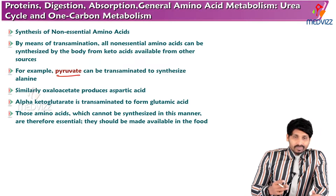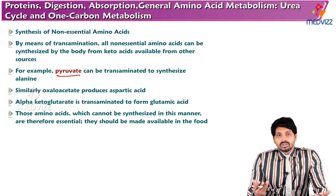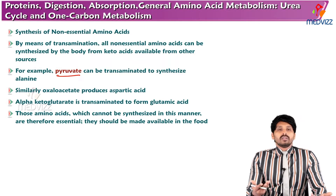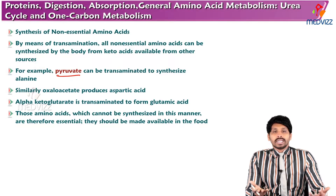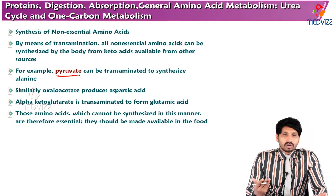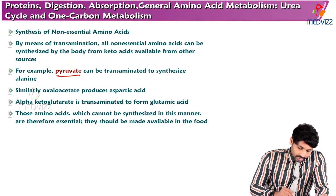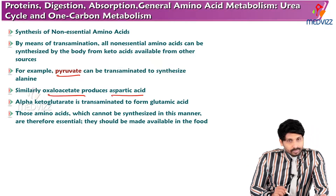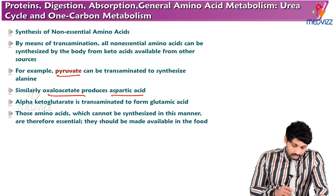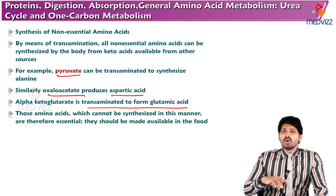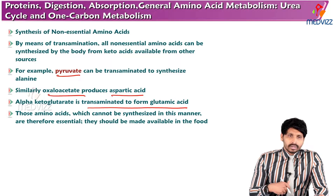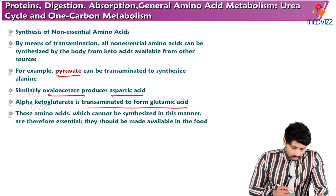For example, pyruvate is a keto acid that can be transaminated to synthesize alanine. Alanine comes from muscle to liver where the amino group is removed to form pyruvate, which can then take up the amino group again to form alanine. Similarly, oxaloacetate produces aspartic acid, and alpha-ketoglutarate is transaminated to form glutamic acid. All these are reversible cycle reactions.